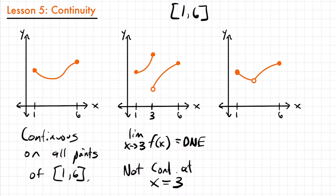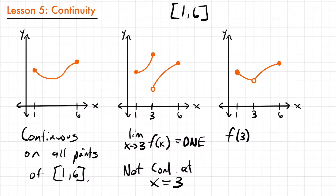Let's look at our third graph — this one's a little different. We start at x equals one and follow the graph until we get to x equals three, where we have a hole, which is considered an interruption. We then continue to x equals six and it seems continuous up to that point. Our only problem is x equals three. One thing we can note right away is that the value at x equals three is undefined because of that hole. That's a huge indicator of whether something is continuous or not at a point.